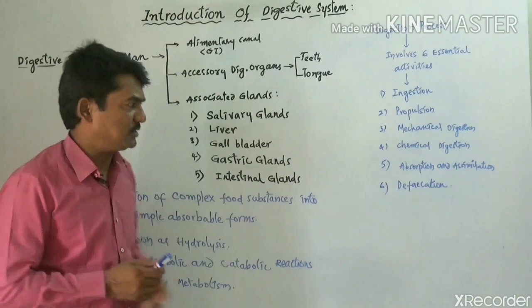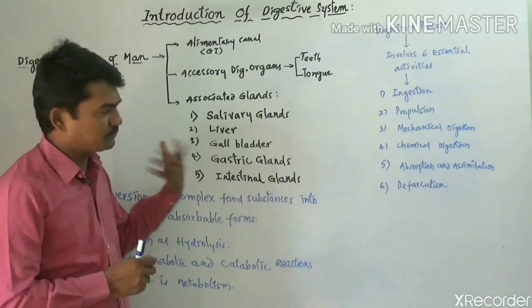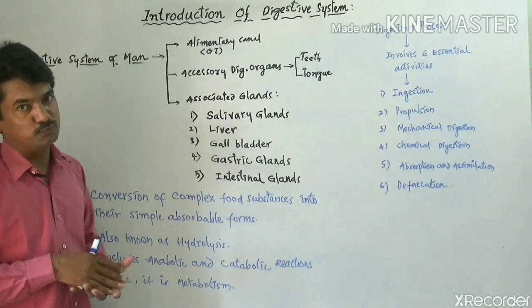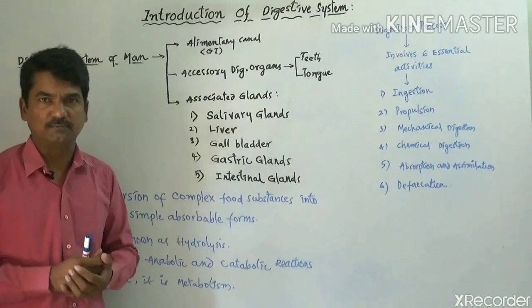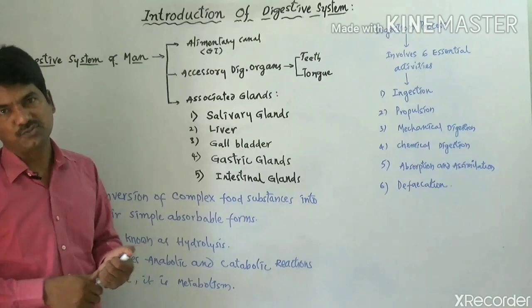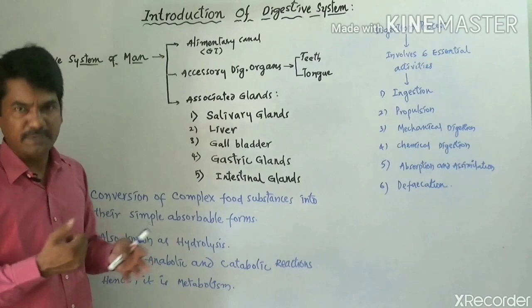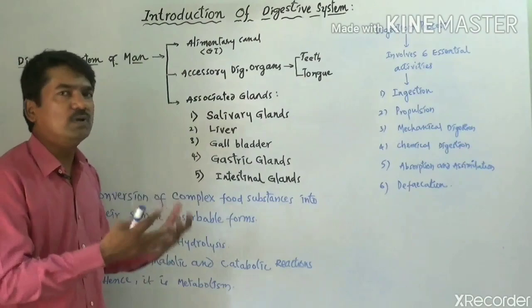Finally, defecation: after finishing of digestion, any unwanted or undigested food molecules present in the small intestine are pushed into the large intestine. After the large intestine, when the matter is received into the anus region and the anus is stimulated by the anal sphincters, the fecal matter is released outside. This removal or releasing of fecal matter is known as defecation.